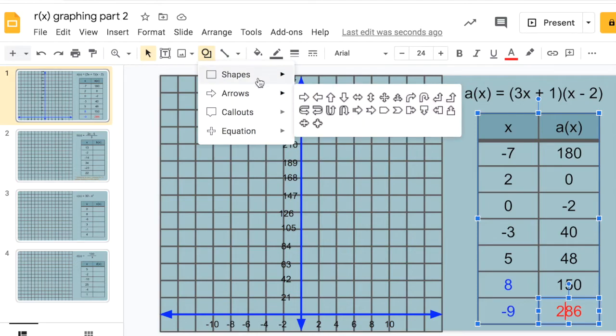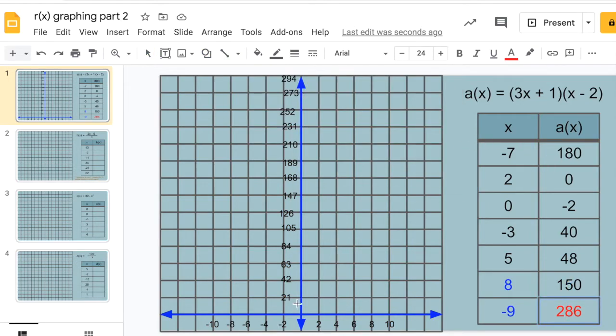Now I just have to put the points on the graph. Negative 7, backwards 7. So notice there is no 7. I've got to be between negative 6 and negative 8. And 180, there's 189, so I'm a little bit below that. So your dots might not be on grid marks this time. 2, 0 will be very close to, well, it's going to be on the axis. Actually, I can put that in an exact grid mark there. 0, negative 2.